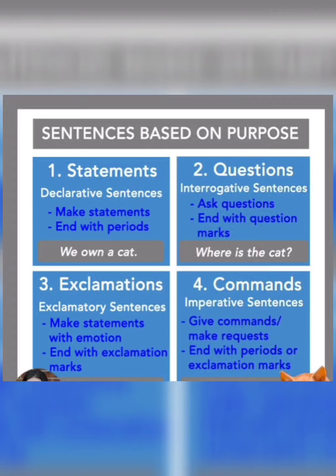For example: 'We own a cat.' The next one is interrogative sentence — we ask questions and it ends with a question mark. Exclamative sentences, which we have already learned, express a sudden feeling and end with an exclamation mark. The last one is imperative sentence, which gives commands, makes requests, and ends with a period or exclamation mark.